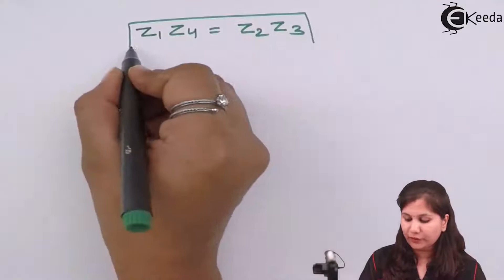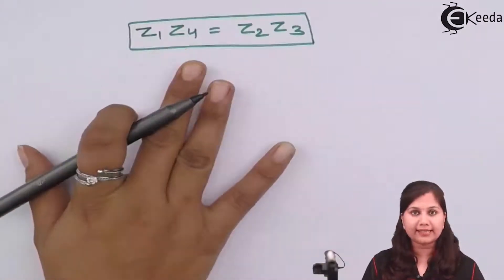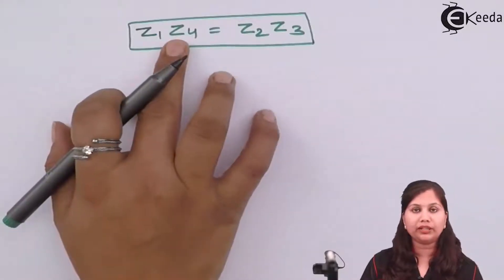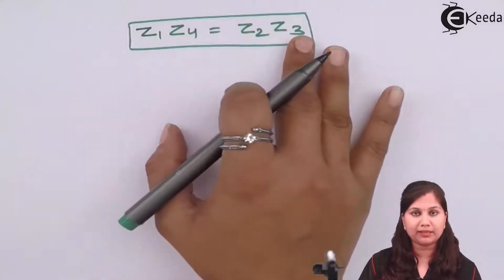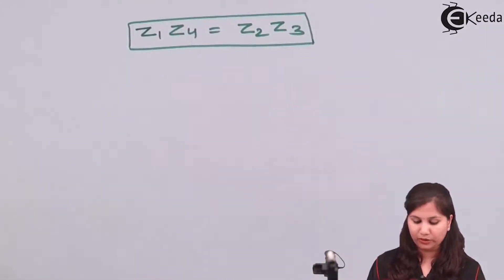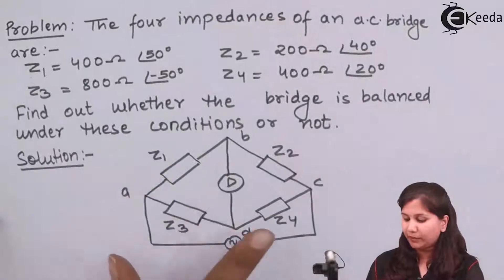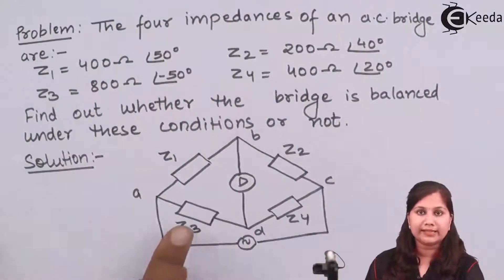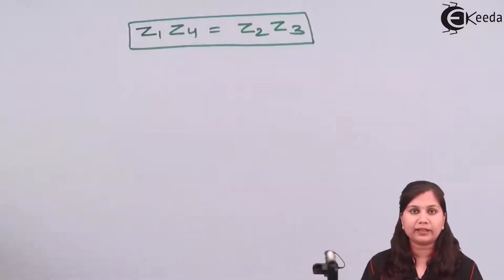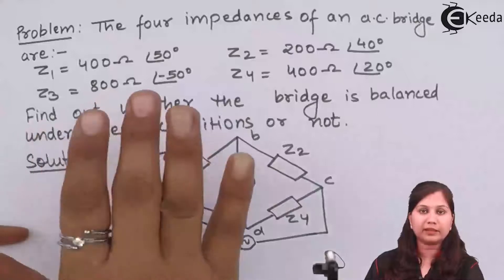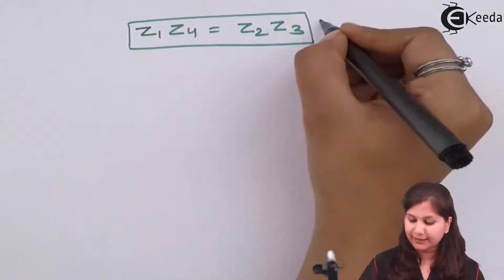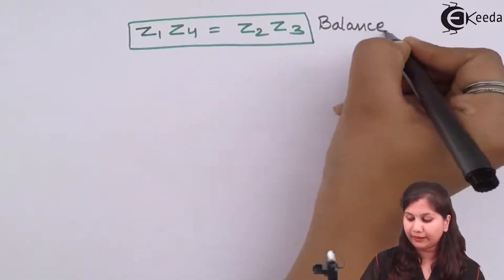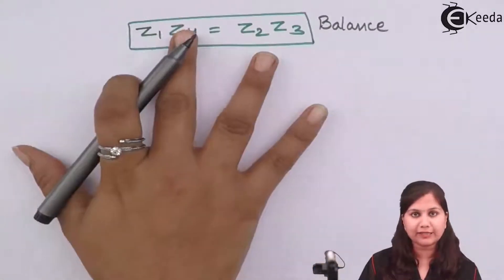This general balance equation states that the product of the magnitudes of the impedances in opposite pairs of arms must be equal. So in the circuit, Z1 multiplied by Z4 equals Z2 multiplied by Z3. Using this equation we will find out whether this bridge is balanced or not, because this is the balance equation and a balanced bridge must satisfy it.